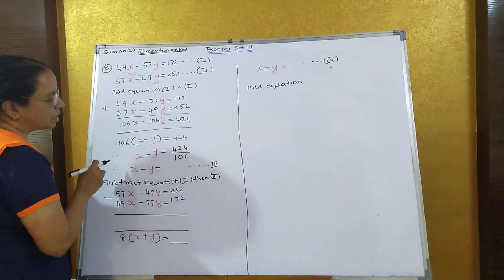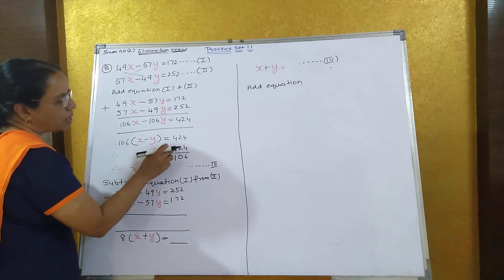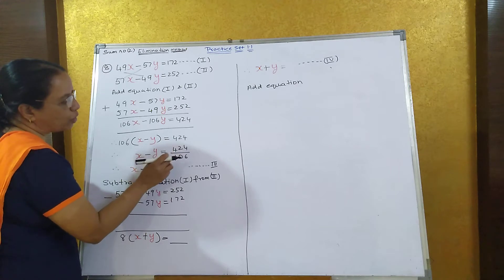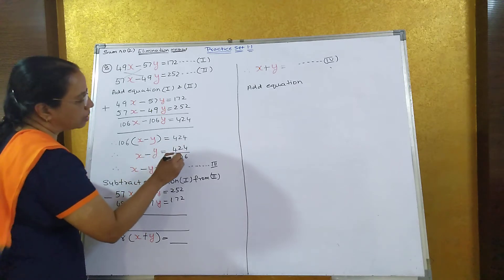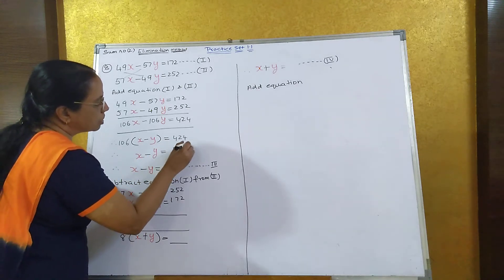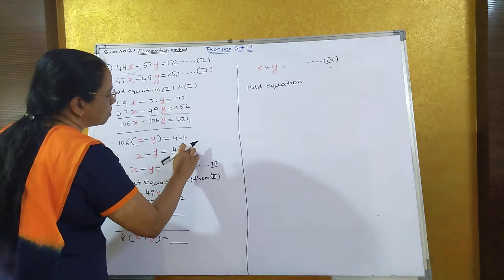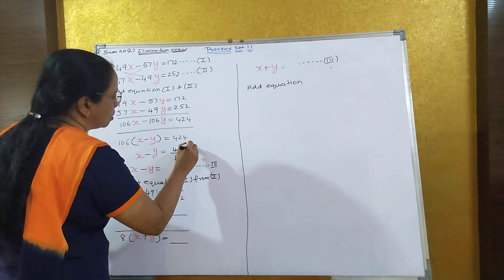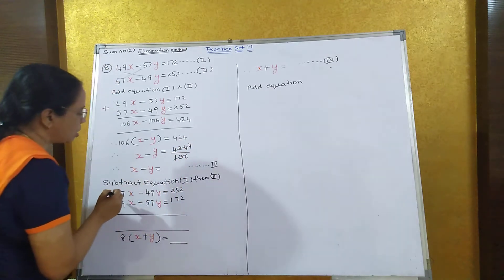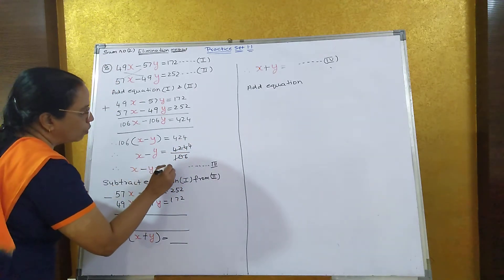Take the 106 to the other side. You will get x minus y is equal to 424 upon 106. When you cancel this, it goes in fours. So x minus y, we have got 4.